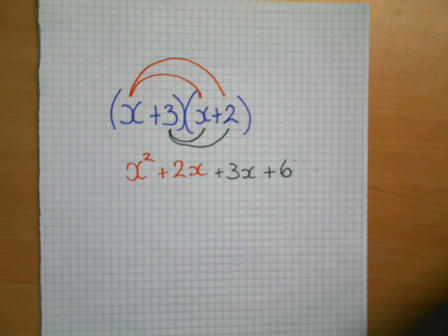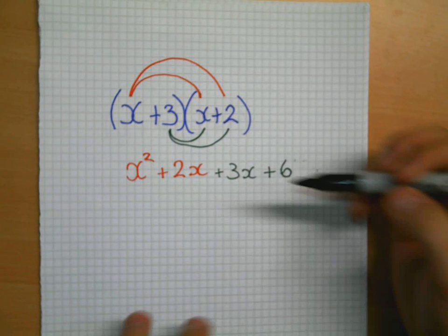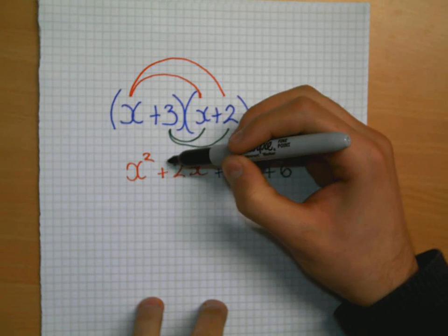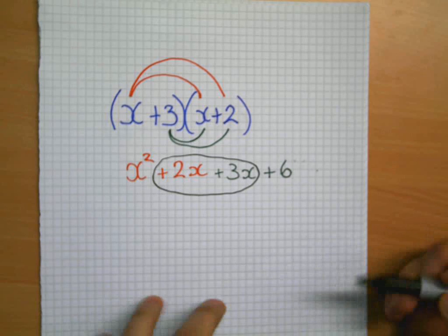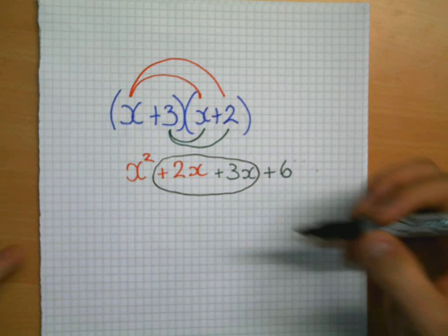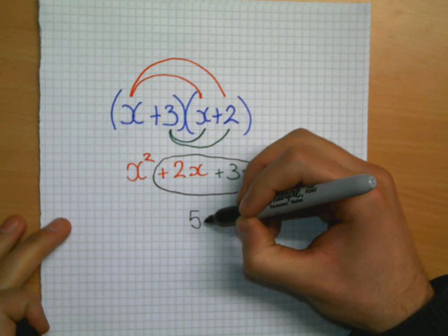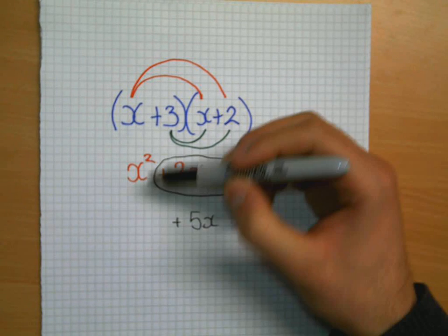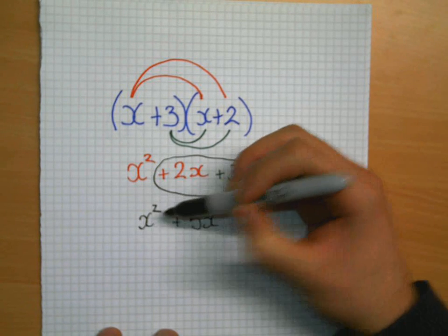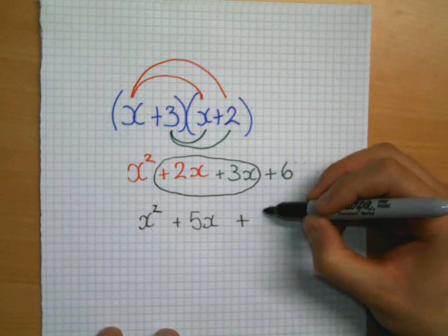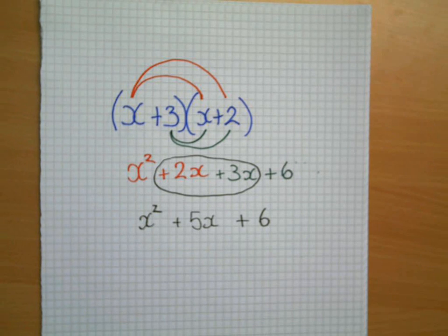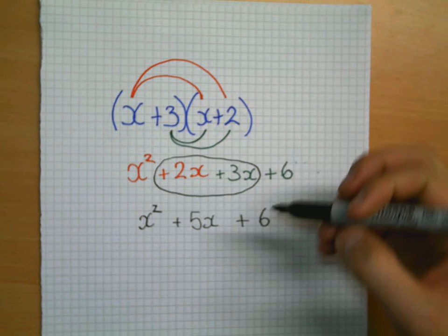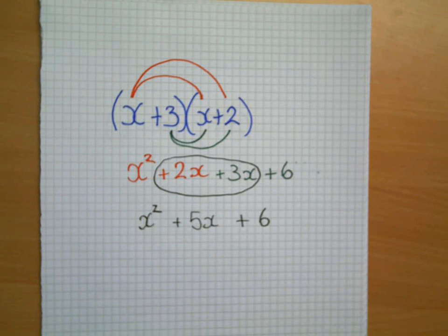Now, we're not quite finished there, we still have one more thing to do. And what that is, is collect the like terms, because I know I have 2x and I have 3x. I can add those together, and that will give me 5x. Now, I can't add the x squared to it because x squared is a completely different thing from x. So you can't collect those like terms, they're not like terms. This here is my final answer: x squared plus 5x plus 6.